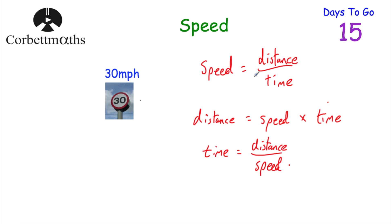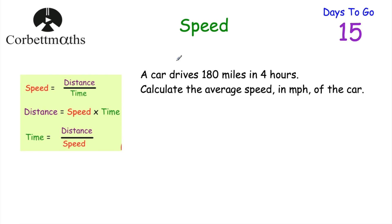It's really important that you remember those. So if you've got your window pens, feel free to jot those on your window so you can remember them — speed is distance divided by time, distance is speed times time, and time is distance divided by speed. Okay, let's have a look at our first question.